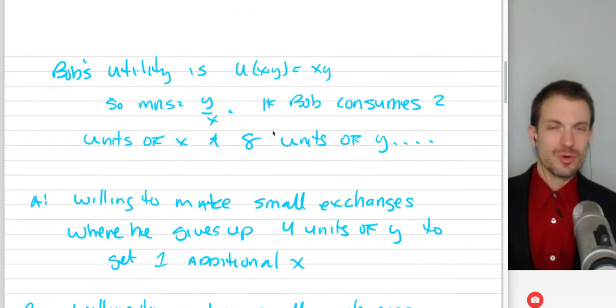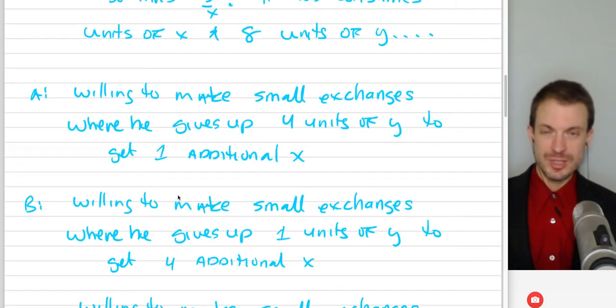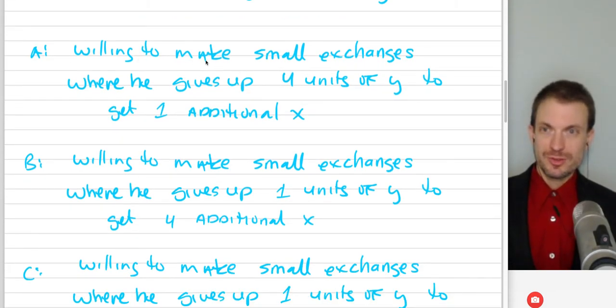The quick way to solve this is let's take my 2 units, let's take my 8 units, plug this in. So 8 divided by 2 is 4. And then the interpretation of the MRS is I'm willing to give up, move down Y units, move down 4 units to move over 1. So the interpretation leads us to Bob is willing to make small exchanges where he gives up 4 units of Y to get an additional X.